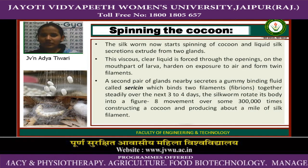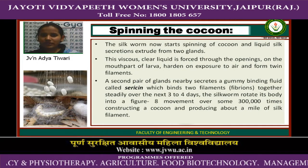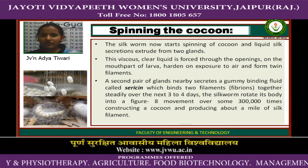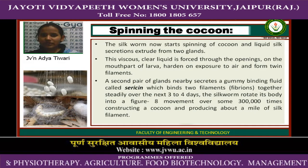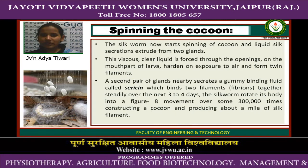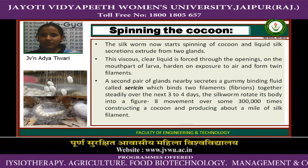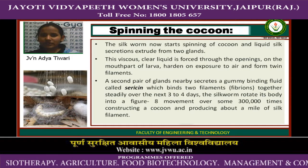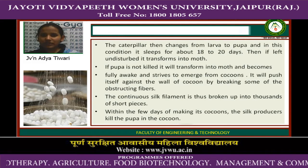The hardened liquid forms twin filaments. A second pair of glands secretes a gummy binding fluid called sericin, which binds the two filaments together. Steadily over the next three to four days, the silk moth rotates its body in a figure-eight movement over some 300,000 times, constructing a cocoon and producing about a mile of silk filament. The caterpillar then changes from larva to pupa.